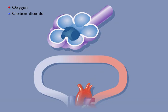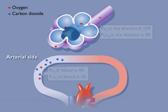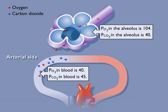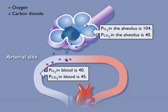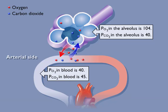Blood coming from the heart at the arterial ends of the pulmonary capillaries has a partial pressure of oxygen, or PO2, of 40 and a PCO2 of 45. Therefore, oxygen diffuses from the air in the alveoli into the blood, and carbon dioxide diffuses from the blood into the alveoli because of these differences in partial pressures.